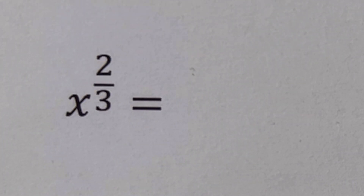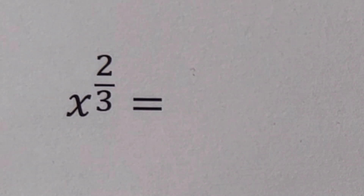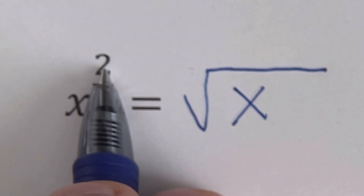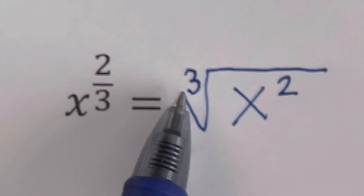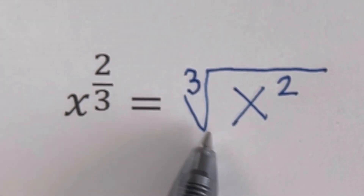Let's take this first example: x raised to the power two-thirds. We write the radical symbol first. The base is x, and the numerator two is the exponent of x, while the three is the index of the radical expression. So we rewrite this as the cube root of x squared. That is its radical form.